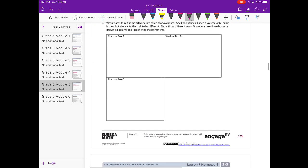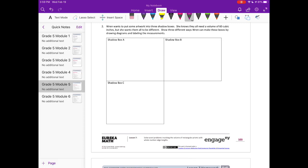Number 2: Wren wants to put some artwork into 3 shadow boxes. She knows they'll all need a volume of 60 cubic inches, but she wants them all to be different. Show 3 different ways Wren can make those boxes by drawing diagrams and labeling the measurements. We need to find 3 different things - something times something times something that equals 60.